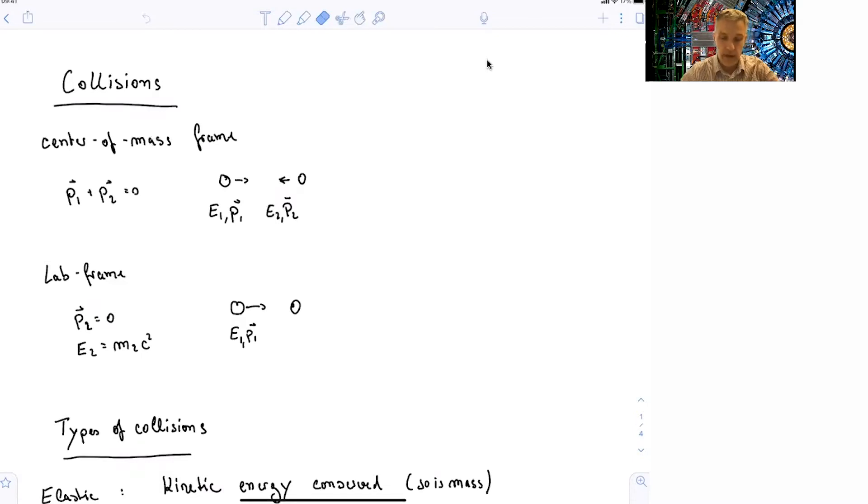We can then describe the energy and the momentum of the particles before and after the collision. In the lab frame, the situation is different. Here, typically, we have one particle with some momentum hitting another particle which is at rest.